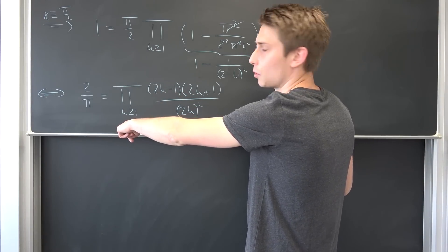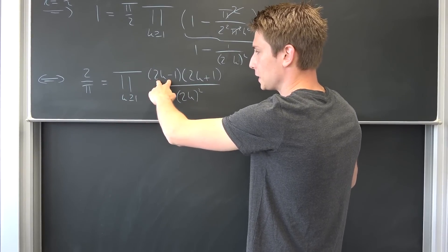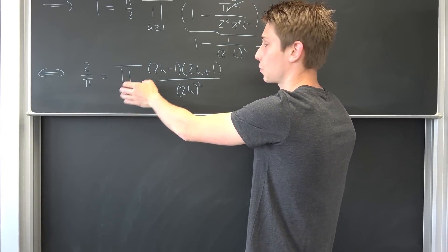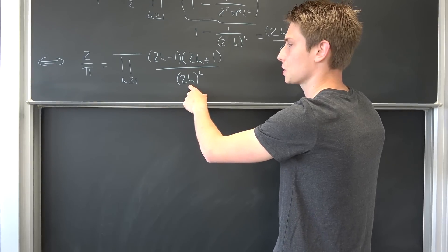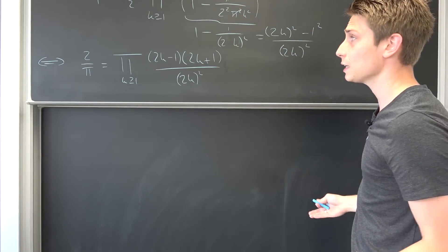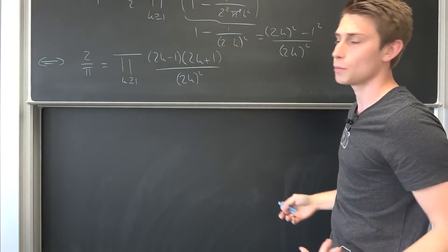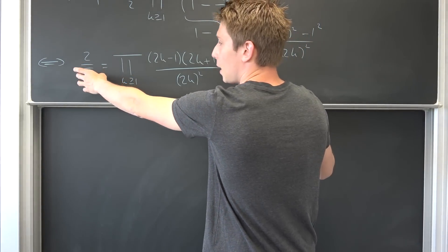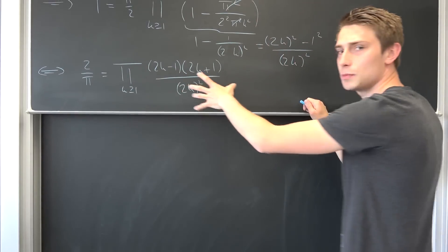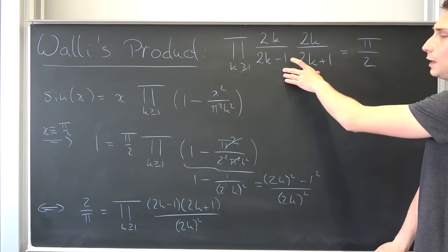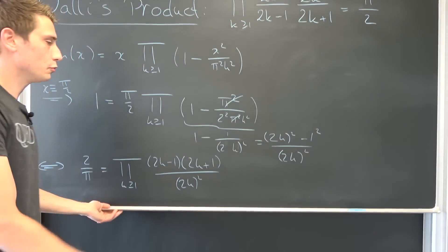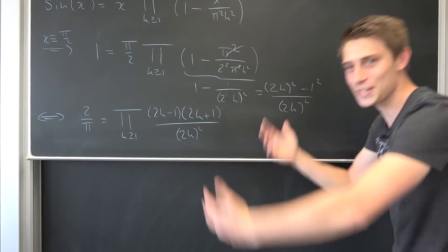Now k runs from 1, meaning the least value we get in the numerator is 1 times 3, which is not equal to 0. For all other values of k it is also nonzero up top, and the denominator is something positive squared, so strictly greater than 0 — meaning all elements are invertible. We can take the reciprocal on both sides to get that pi over 2 is nothing but the infinite product of the reciprocal of those arguments. Splitting up the product gives us exactly the Wallis product. And this is it.